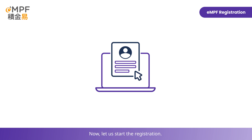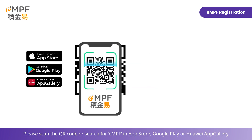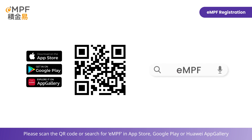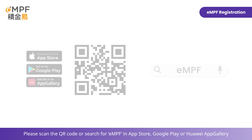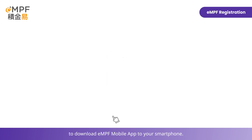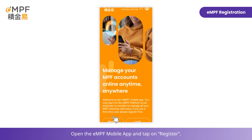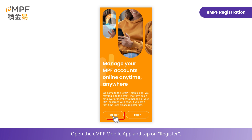Now let us start the registration. Please scan the QR code or search for EMPF in the App Store, Google Play, or Huawei AppGallery to download the EMPF mobile app to your smartphone. Open the EMPF mobile app and tap on Register.